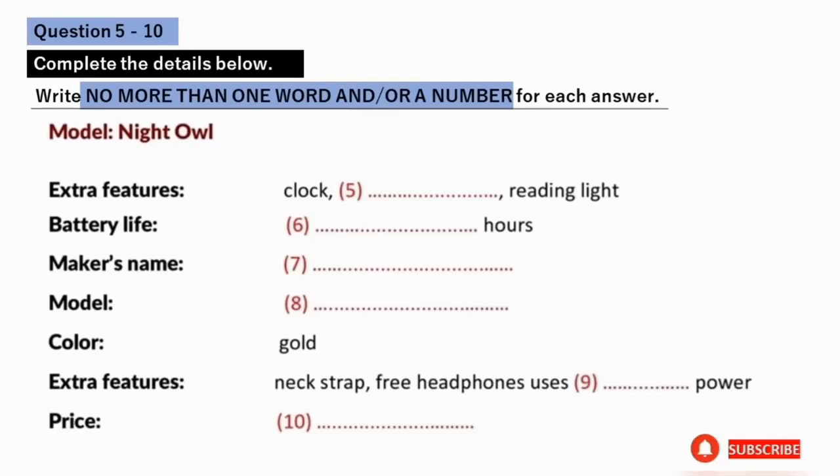Now listen and answer questions 5 to 10. There certainly is. Introducing our top-of-the-range model, the Night Owl. Available only in black, but packed with extra features, such as a clock, and it has a television, complete with 10-centimeter screen, and this makes it perfect for the bedside table, a built-in reading light. Very clever.